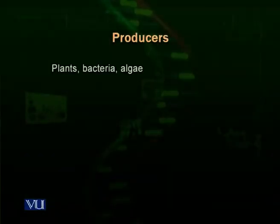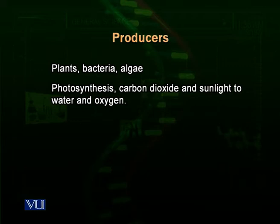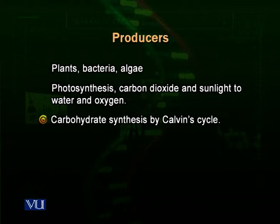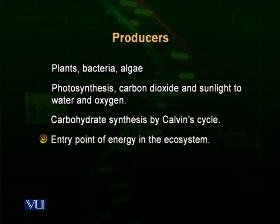Producers include many photosynthetic bacteria, algae, and all plants. Without those plants, no life is possible. They do photosynthesis, utilizing carbon dioxide, water, and sunlight energy, and make energy in chemical form — usually called ATP, the adenosine triphosphate — and make carbohydrates for use by themselves and for consumers. We call the producers the entry point of energy inside an ecosystem.